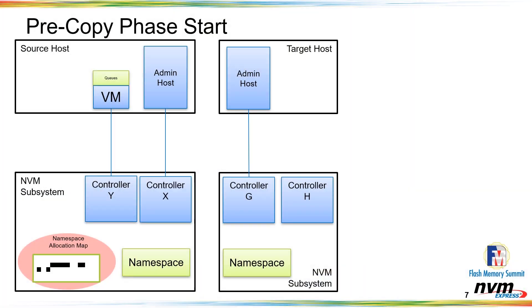Looking at the system architecture: we have a source host connected to an NVM subsystem. There's a VM with controller Y — that's the VM and controller we're going to migrate — with one namespace attached. That namespace has LBAs allocated. The initial TPAR keeps an allocation map in the NVM system so the host can read the mapping and determine which LBAs are actually mapped, then do read commands accordingly. The goal is to take this controller state, this namespace, and this VM and move it over to the target.